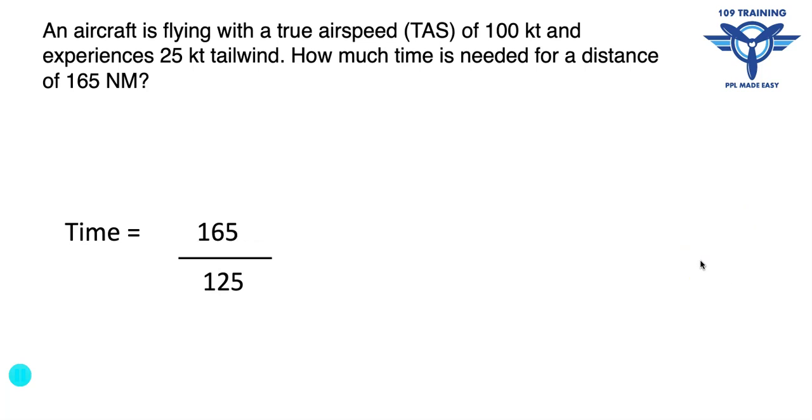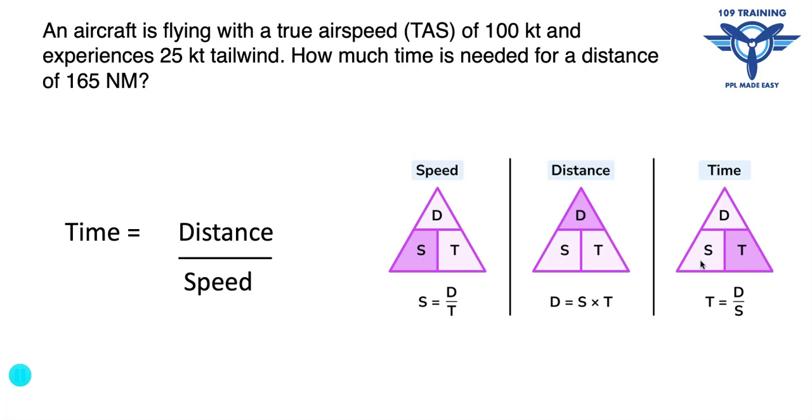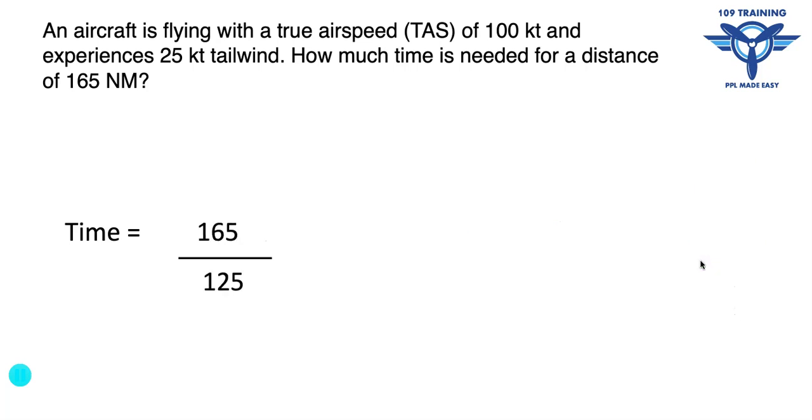I've got my numbers from my question. Distance over speed - distance is 165, speed is that ground speed, remember that's the number we want not the airspeed. If I divide one over the other, that gives me an answer of 1.32 hours. That's semi-useful as a decimal, but actually we're interested in hours and minutes, and that's what the question will ask for as well.